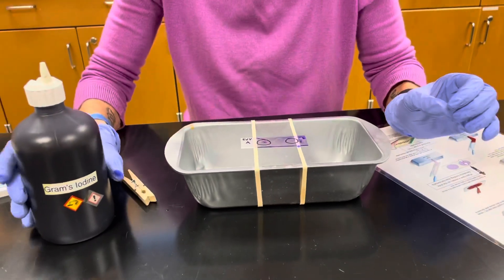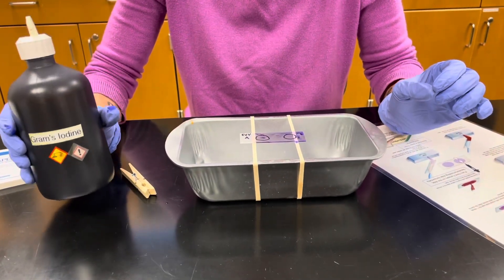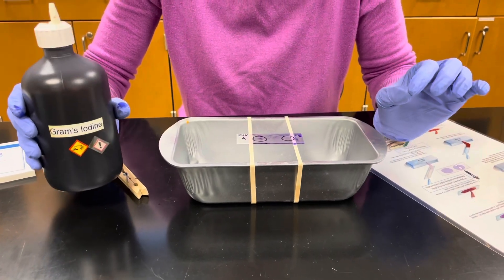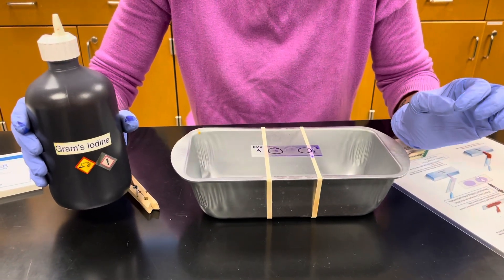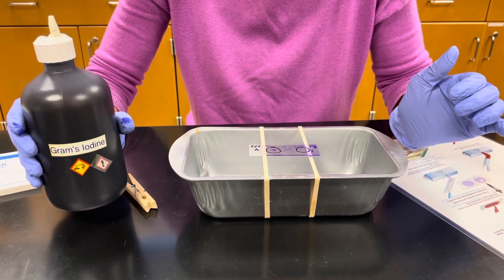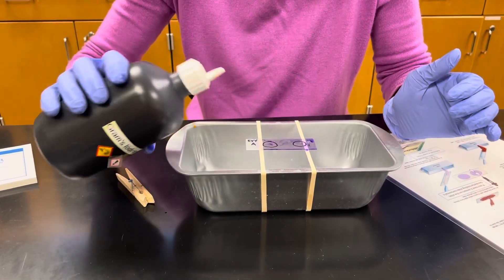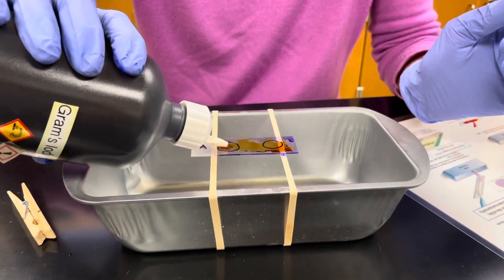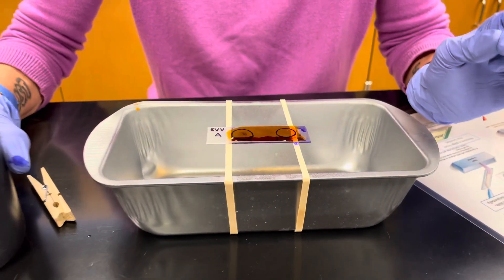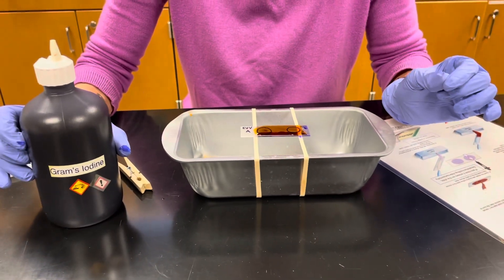The next step is to add a mordant which is going to be Gram's iodine. You're going to cover your smear. What the iodine is going to do, it's going to form a crystal violet iodine complex that's going to get trapped inside of the Gram positive cells. You allow the mordant to sit on your smear for one minute.